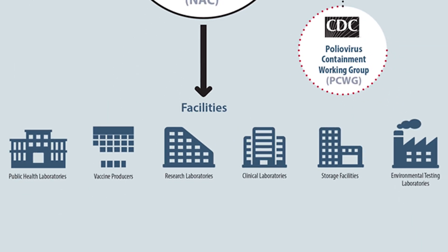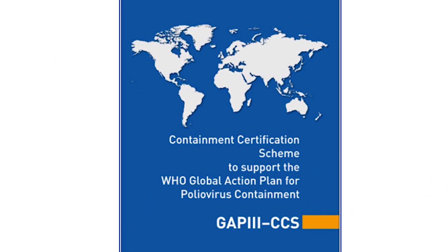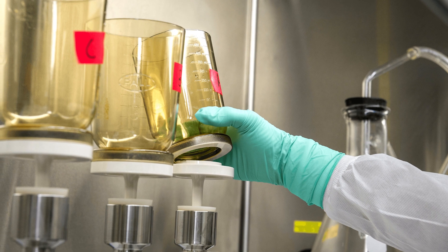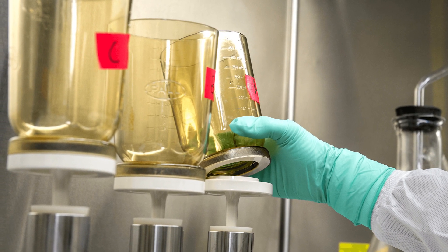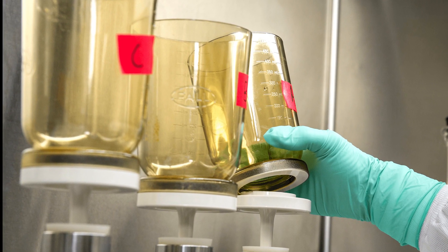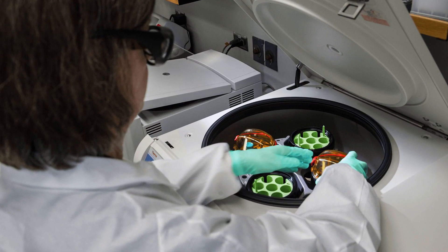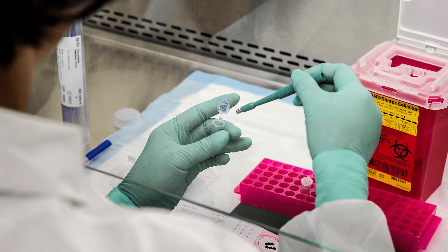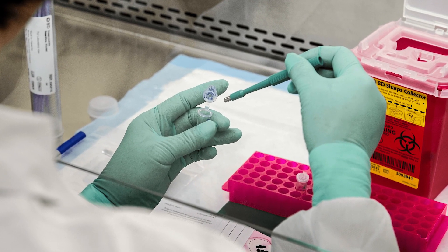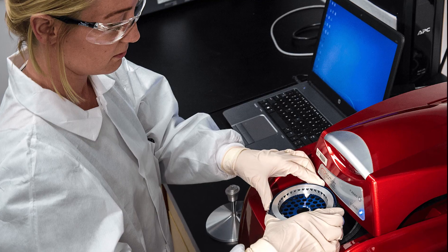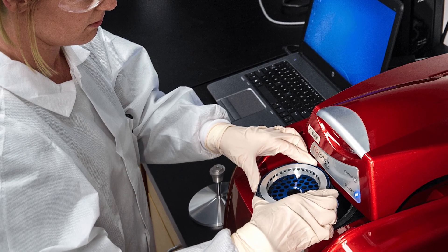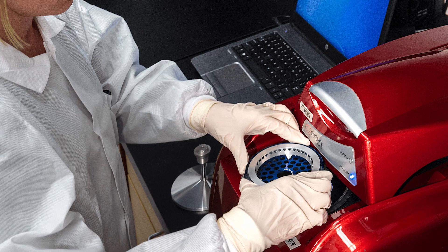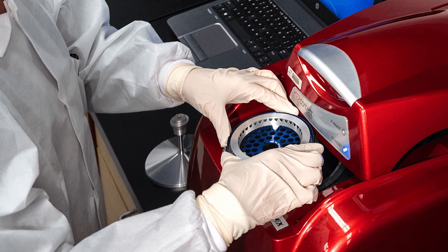The second objective is to follow up with facilities that report poliovirus and PIM to make sure they know about the Global Action Plan and to encourage them to destroy unneeded materials or discuss preparations to implement containment measures for eradicated polioviruses. The third objective is for the U.S. NAC to audit facilities that intend to store eradicated poliovirus and to certify them as poliovirus essential facilities, also known as PEFs. The U.S. NAC team supports these facilities with individual assistance, policies, and informative webinars.